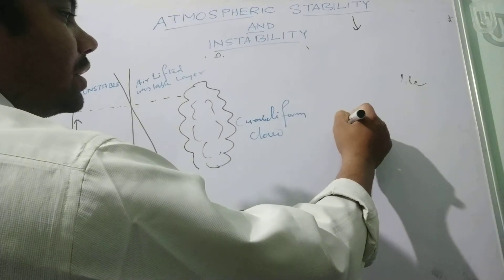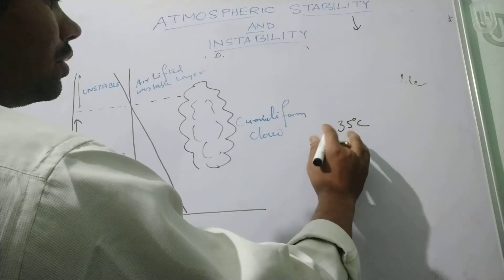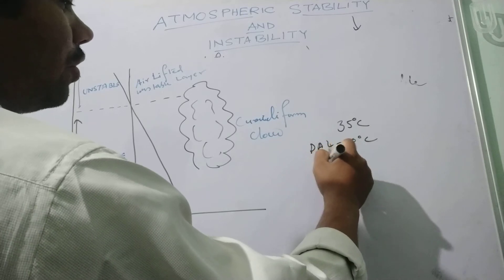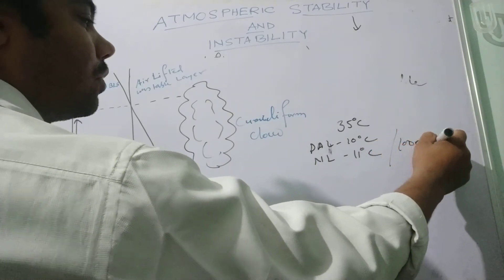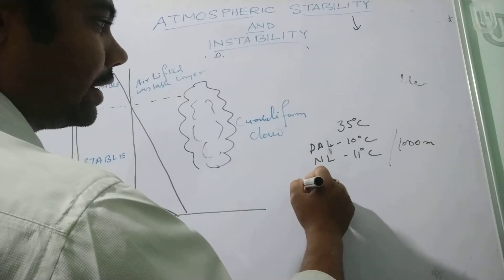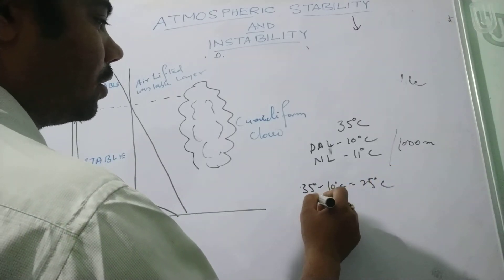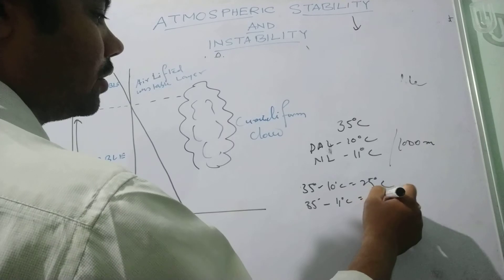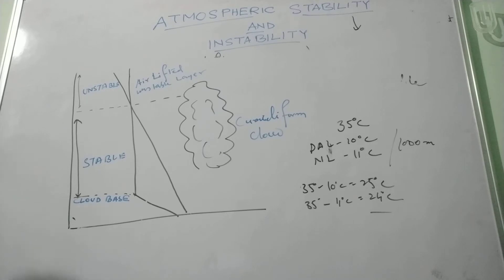For example, the dry adiabatic lapse rate is 10 degree centigrade and the normal lapse rate suppose 11 degree centigrade. Then after 1000 meters the temperature of the ascending air is 35 minus 10 equal to 25 degree centigrade, and the temperature of the surrounding region equals 24 degree centigrade. Thus the rising air becomes warmer than the surrounding air, that continues to rise and expand, and the instability conditions develop.